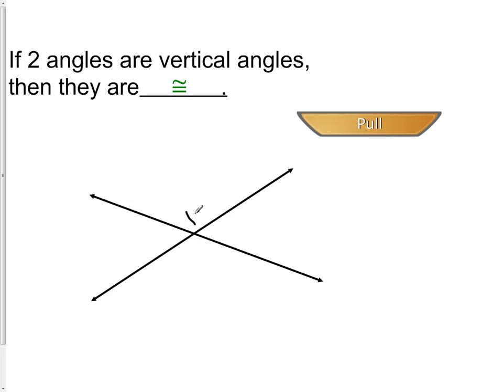The angle on the top here would be congruent to the angle on the bottom. We could also say that the angle on this side is congruent to the angle on this side. We do need to be careful when talking about vertical angles, though.